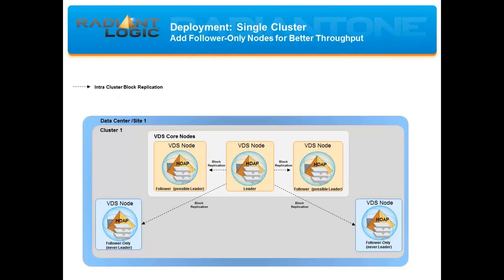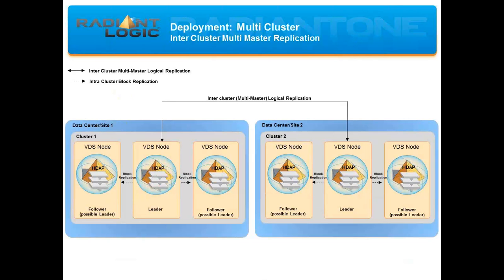Within the cluster, follower nodes are available to become leaders should the currently designated leader node fail, and ZooKeeper will elect a new leader from the pool of follower nodes. Follower-only nodes are special — they can never become a leader. They're a lightweight node that doesn't require the additional functions of a leader or follower node, and they're added to a cluster to handle more client load and improve throughput. Another advantage of deploying a cluster is the ease and speed at which you can scale. Once you install Radiant One on a new machine and indicate that you want to join an existing cluster, all configuration files and HDAP store data are automatically applied to the new node, and it quickly becomes operational within a matter of minutes.